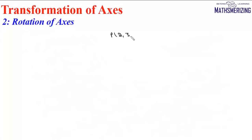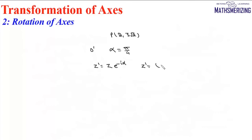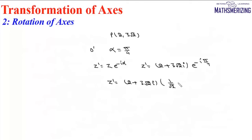Now let us take an example. Suppose we have point B given by (2, 3√2). Keeping the origin the same, the axes are rotated by an angle pi by 4 in the anti-clockwise direction. We need to find the coordinate of point B in the new system. Using the complex number method, Z dash equals Z times e to the power minus iota alpha. So Z dash equals (2 plus 3√2 iota) times e to the power minus iota pi by 4.